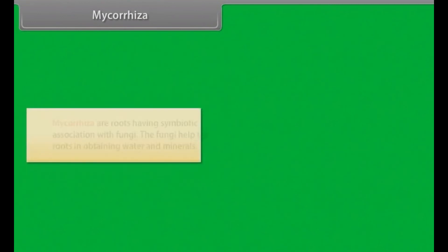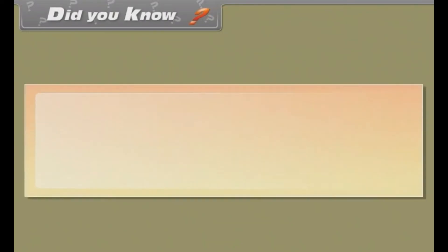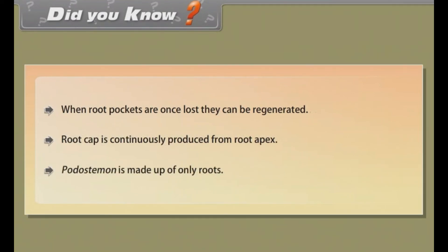Mycorrhizae: Mycorrhizae are roots having symbiotic association with fungi. The fungi help the roots in obtaining water and minerals. Did you know: When root pockets are once lost, they can be regenerated. Root cap is continuously produced from root apex. Podostemon is made up of only roots.